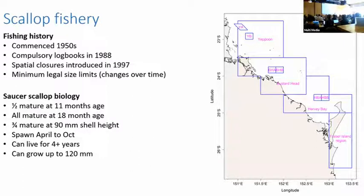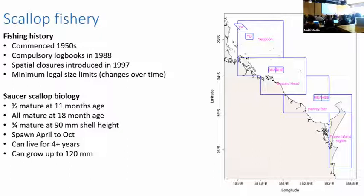Let me talk about the scallop fishery. I think the fishery started from around 1950, the logbook system was introduced in 1988, and fishermen needed to record their catch in 30-minute by 30-minute grid cells. The scallop fishery was listed in 1996 and then closures were introduced in 1997. Initially there were only three closures, and now we have seven closures and six small areas. We cannot see catch information for the closures in the logbook because fishermen only recorded by grid, not by closure.